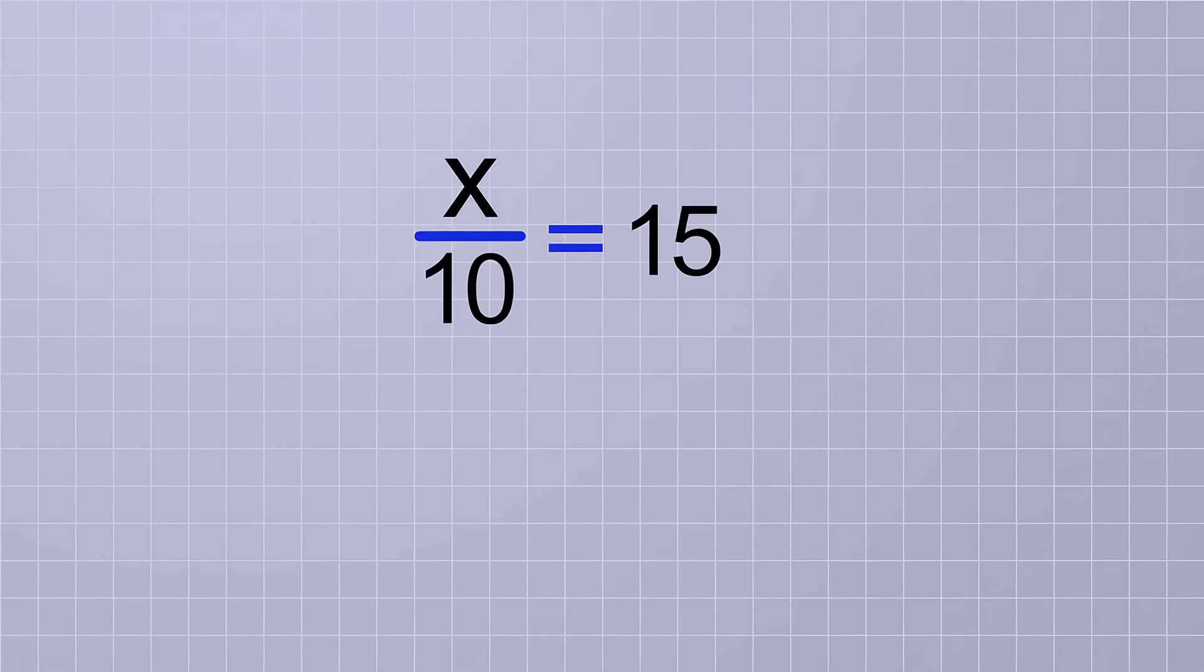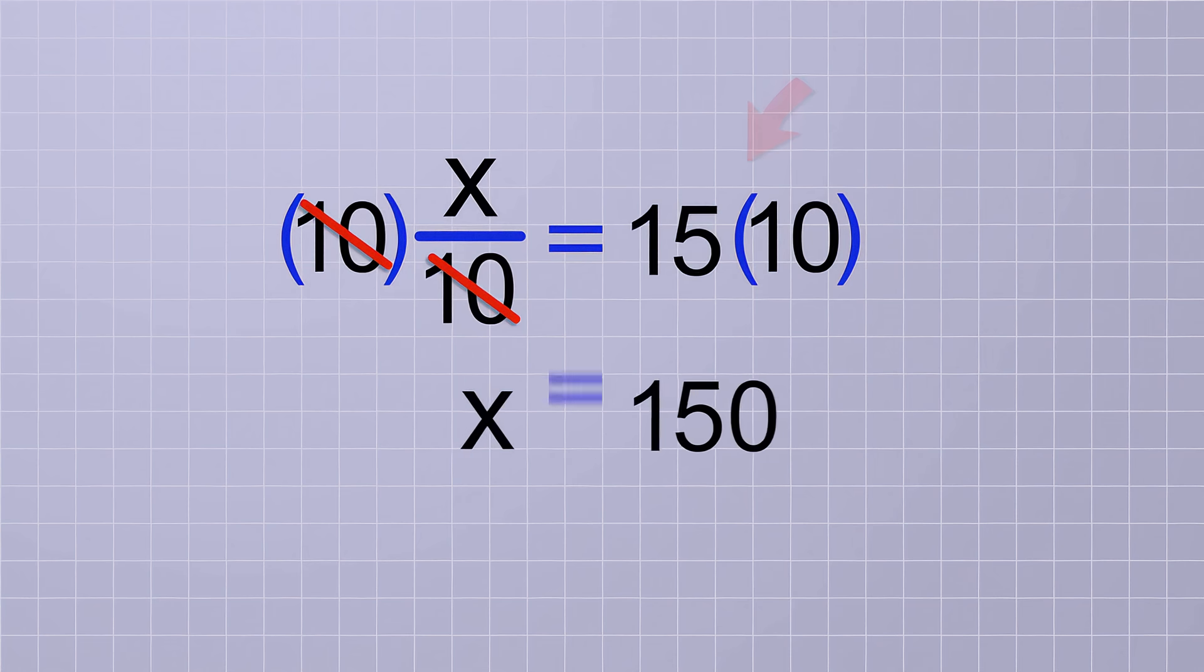That's not too hard either. Let's try another one: x over 10 equals 15. In this problem, since the x is being divided by 10, to get it by itself, we're going to need to multiply both sides of the equation by 10. On the first side, the 10's cancel, leaving x all by itself. And on the other side, we have 15 times 10, which is 150. So our answer is x equals 150.